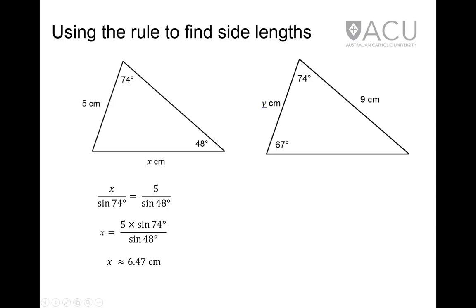In the second triangle, the unknown angle is first calculated, and then the equation becomes y over sin 39 degrees equals 9 over sin 67 degrees. This can also be rearranged to calculate y, which is approximately 6.15 centimeters.